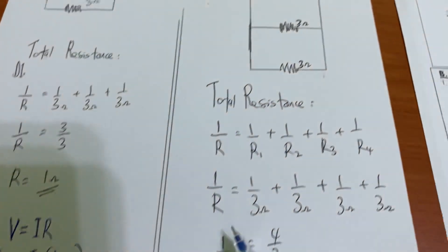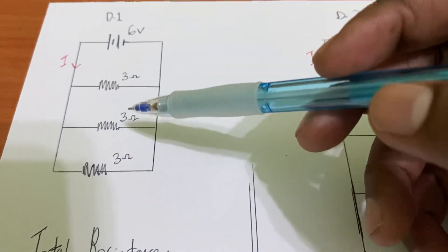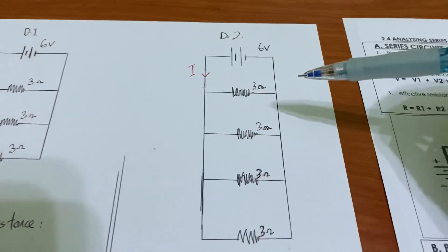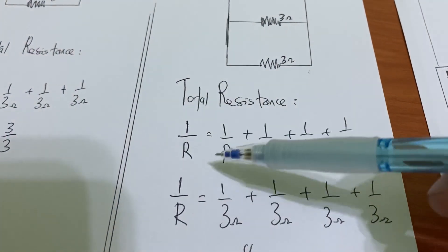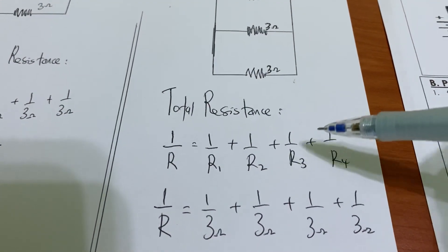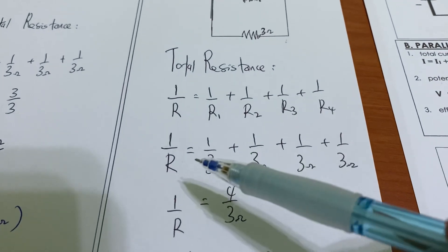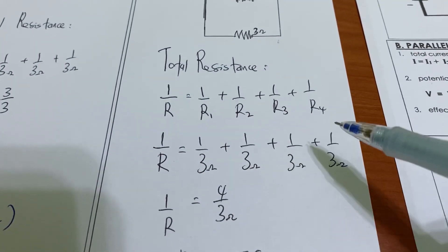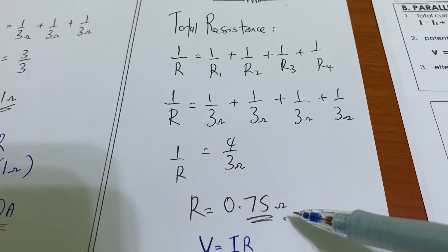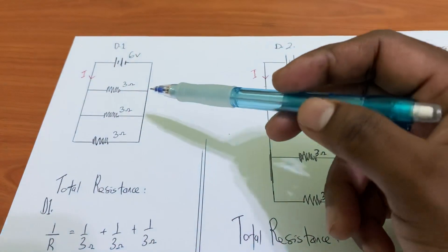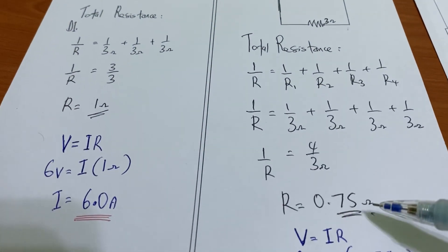We can continue with another example. The circuit now has 4 resistors in parallel instead of 3. The method is the same: 1 over R equals 1 over R1 plus 1 over R2 plus 1 over R3 plus 1 over R4. Solving gives 1 over R equals 4 over 3, and the total resistance is now only 0.75 ohm. So as the number of branches increases, the total resistance is decreasing.